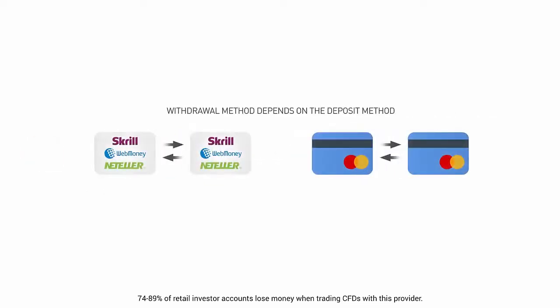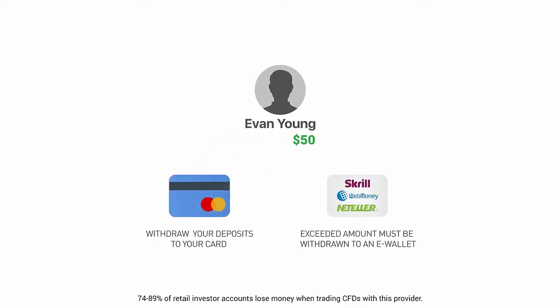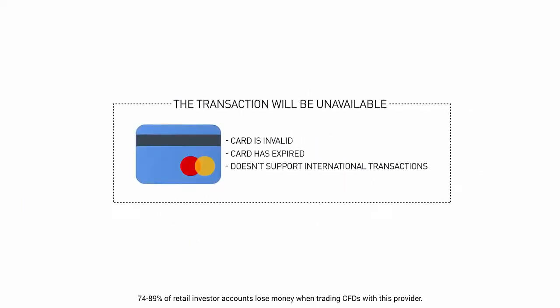There are situations when you are not able to withdraw funds to your bank card. This happens when you didn't make a deposit from a bank card, or when your withdrawal amount exceeds the amount of your deposits. In that case, you can only withdraw the total amount of your deposits over the last 90 days to your card, and the exceeded amount must be withdrawn to an e-wallet or bank transfer with a fee. If your card is expired, invalid, or doesn't support international transactions, we won't be able to transfer money to your card.